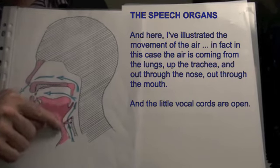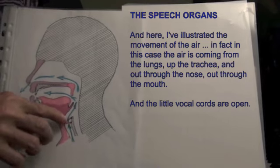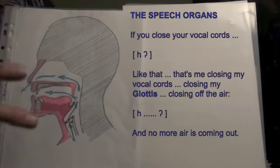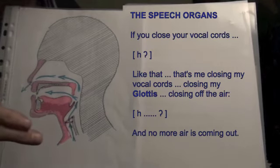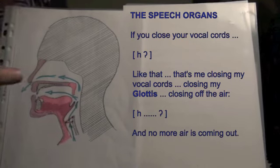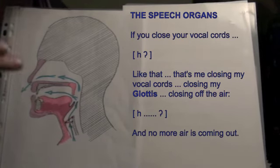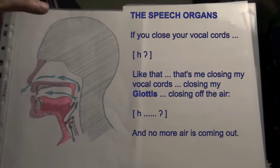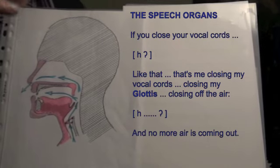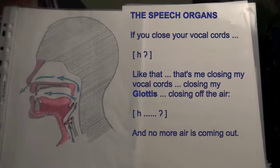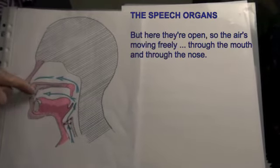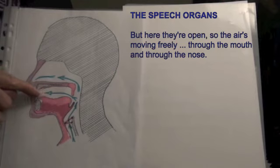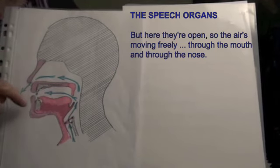The little vocal cords are open. If you close your vocal cords — like that — that's me closing my vocal cords, closing my glottis, closing off the air, and no more air is coming out. But here they're open, so the air is moving freely through the mouth and through the nose.